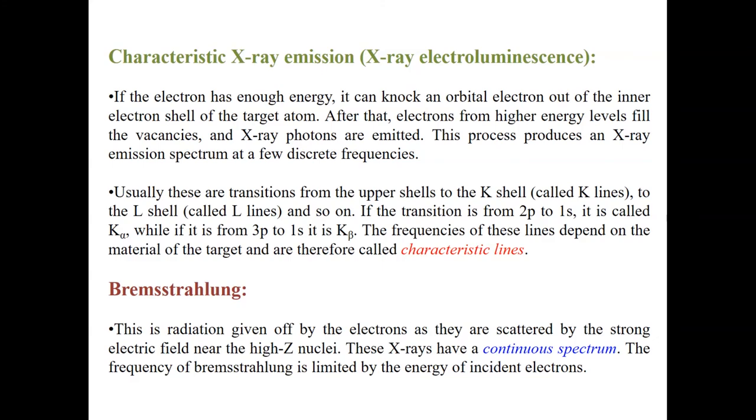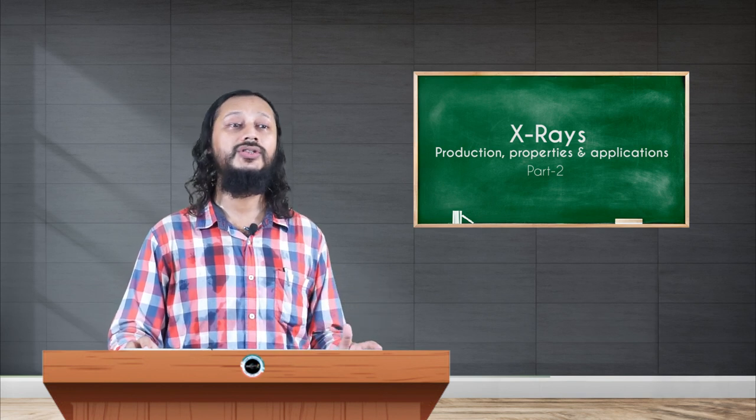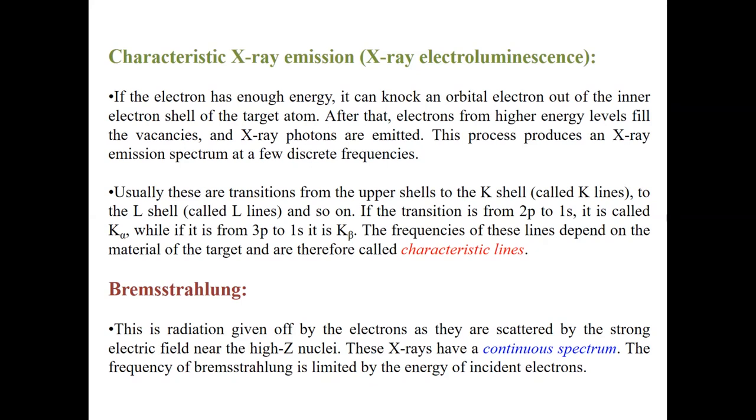Now suppose the transition is a 2P to 1S kind of a transition, it is subscripted with an alpha. If it is a 3P to 1S kind of a transition, it is subscripted by a beta. So K sub alpha, K sub beta, L sub alpha and so on and so forth. Now the thing is, the frequency of these X-rays spectra, the lines that are emitted, they depend on the material that has been used as the target. So the materials characteristic decides what kind of X-rays, what frequencies of X-rays are produced, and that is the reason why such X-ray emissions are called characteristic X-ray lines.